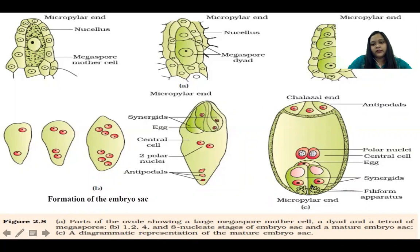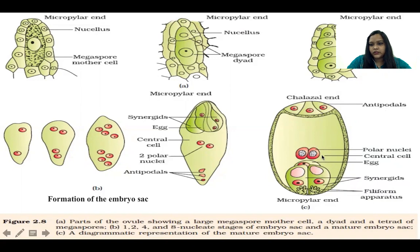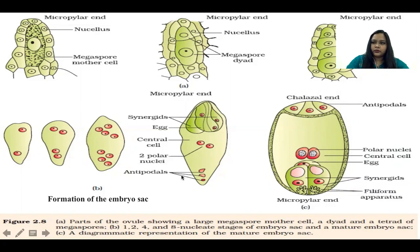Here is the figure of the mature embryo sac. At the chalazal end, the antipodal cells are there. At the micropylar end, there will be one egg cell and two synergid cells. In the central cell, two polar nuclei are observed. Are you getting it — how the embryo sac is formed?